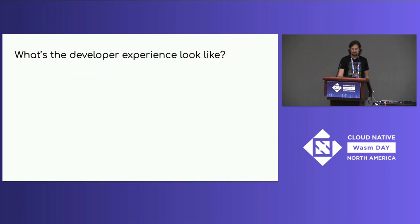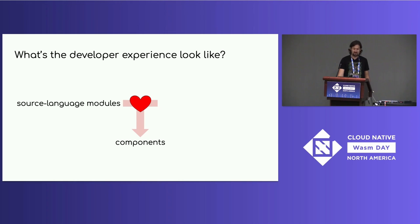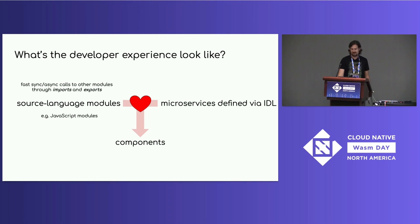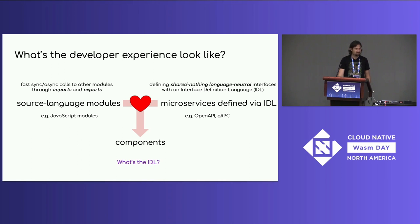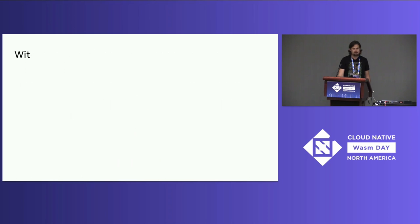So what does the developer experience look like? Components are sort of like the love child of two things we're familiar with: source language modules, like JavaScript modules, where we're doing fast sync and async calls to other modules through imports and exports; and microservices defined via IDL, like OpenAPI or gRPC, where we're defining shared-nothing interfaces in an IDL and deriving language-specific bindings from that. So what's the IDL for components? That's something the WASI subgroup has been working on — it's called WIT.